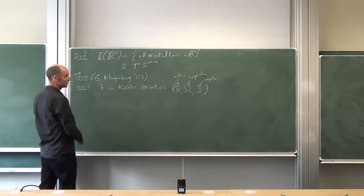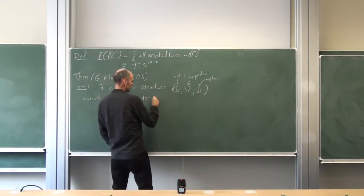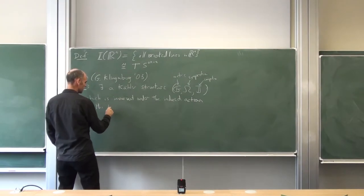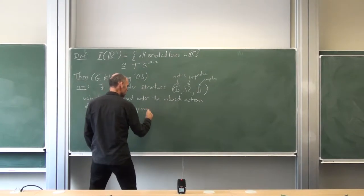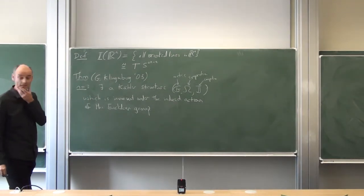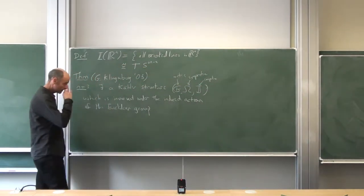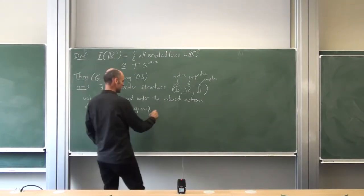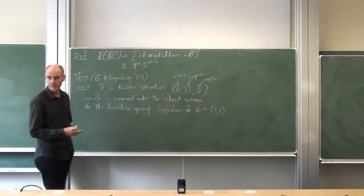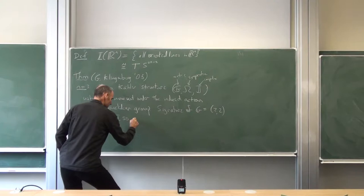What we proved is that there exists such a Kähler structure which is invariant under the Euclidean group — rotations and translations. It's a big group, so you wouldn't expect so many invariant structures to exist, but in fact one exists for n=3. What we also find is that this structure is somewhat unusual in that the signature of the metric g is (2,2): two positive directions and two negative directions.